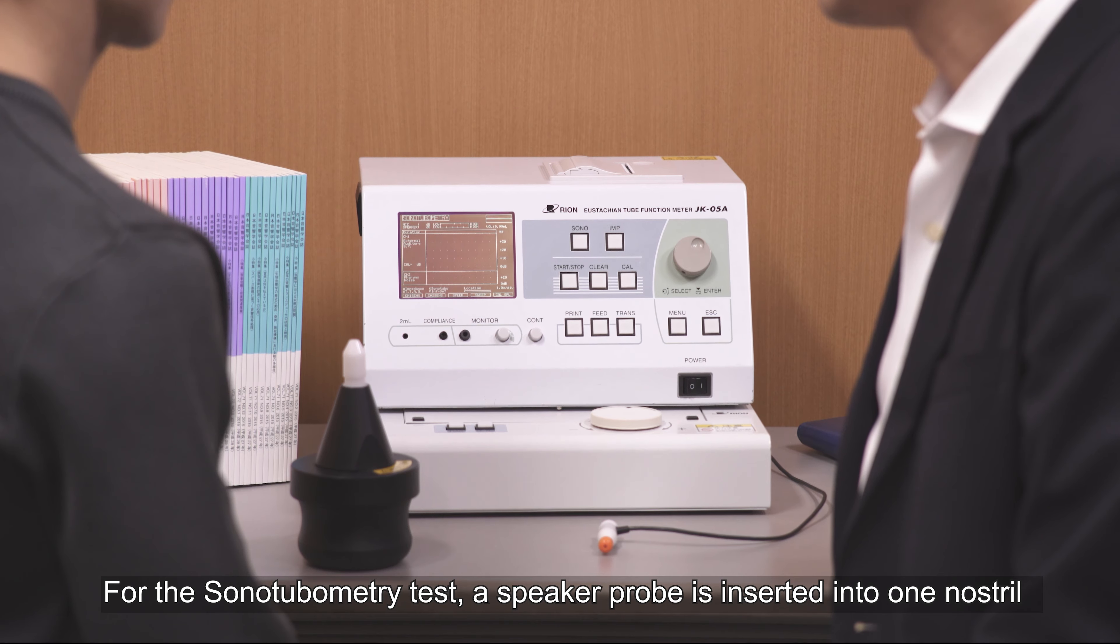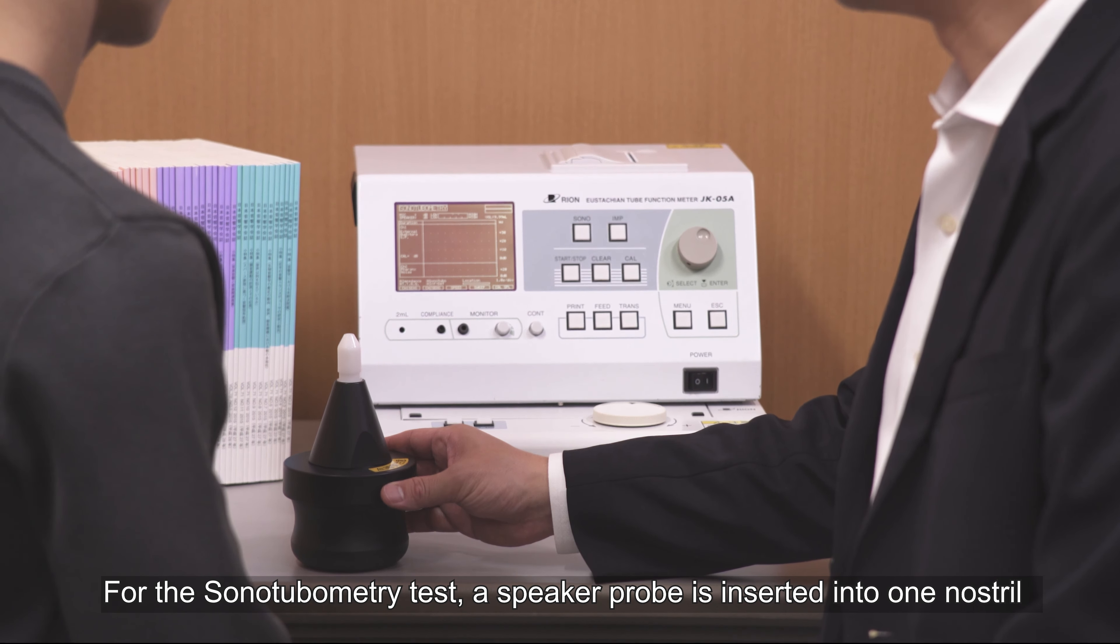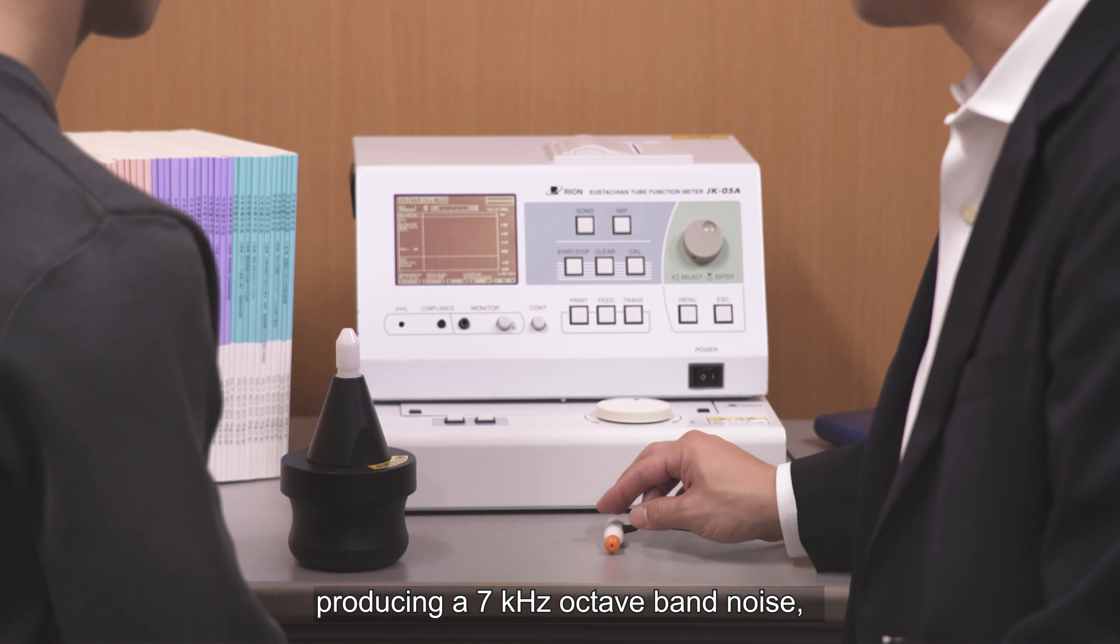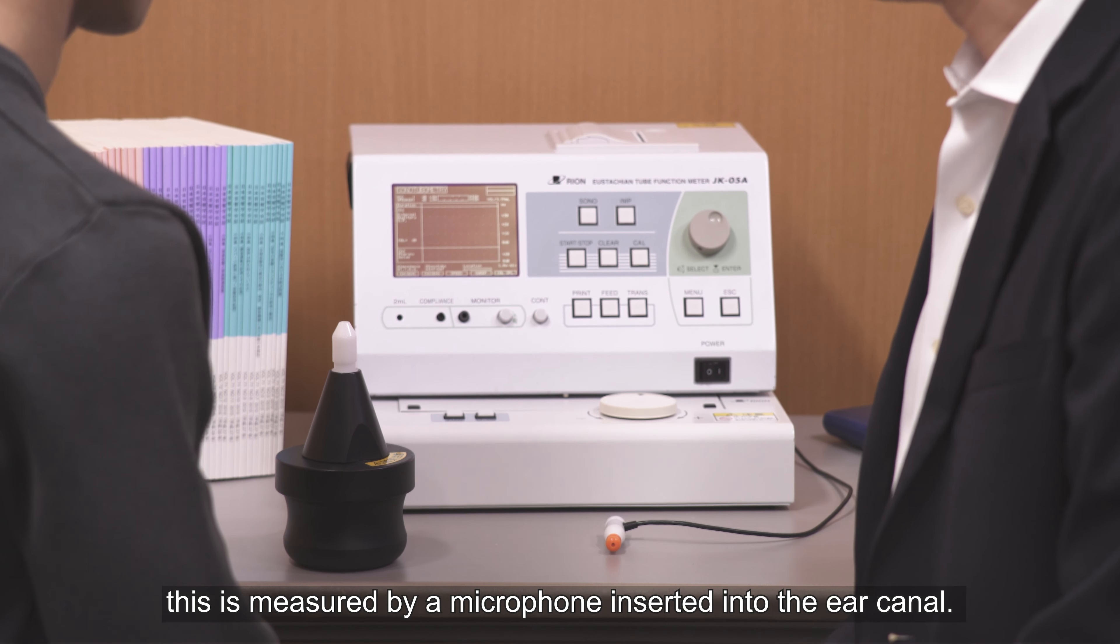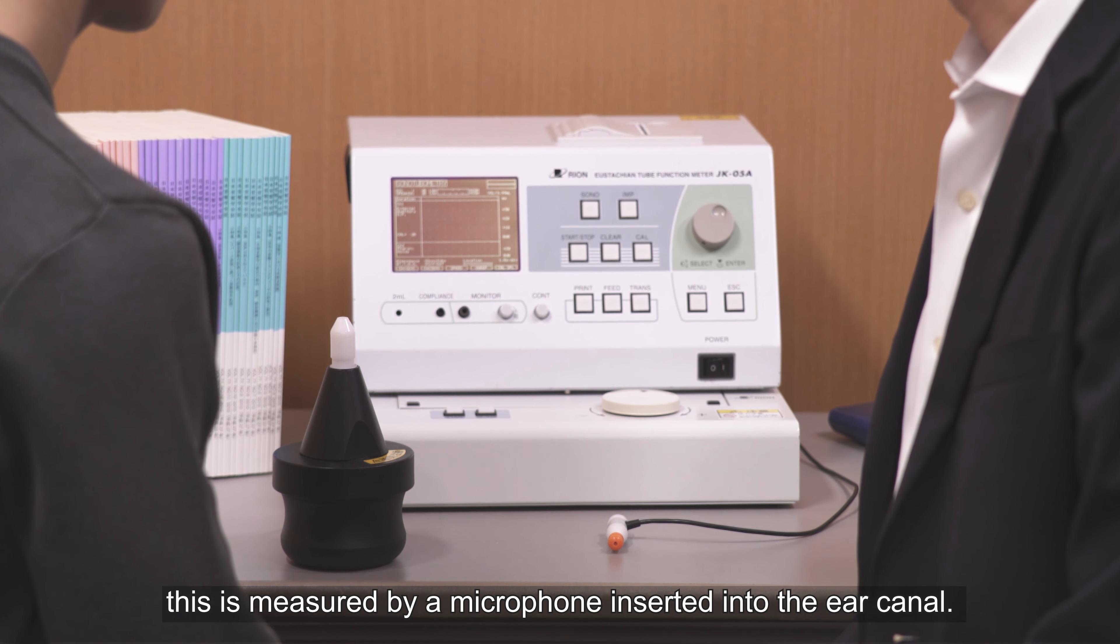For the sonotubometry test, a speaker probe is inserted into one nostril, producing a 7kHz octave band noise. This is measured by a microphone inserted into the ear canal.